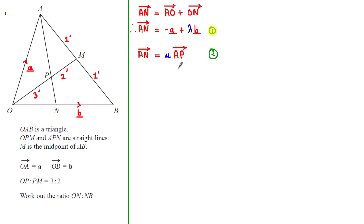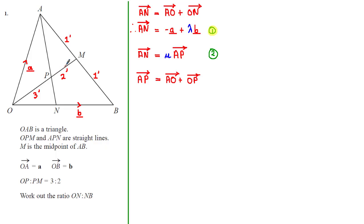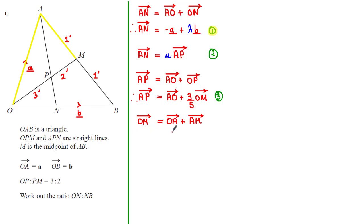To express this in terms of a and b, we need to find the vector AP. From the diagram, AP = AO + OP. We already know AO. To find OP, we use the ratio on the diagram: the line OM is represented by 5 parts (3 + 2), so the line OP is equivalent to three-fifths of OM. Therefore AP = AO + (3/5)·OM. We can find OM by going O to A then A to M, so OM = OA + AM.